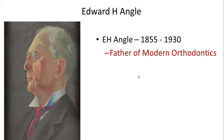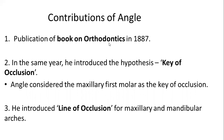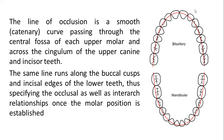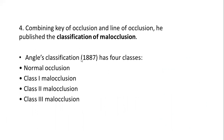Edward Hartley Angle is called the father of modern orthodontics. His contributions include the publication of a book on orthodontics in 1887. He introduced the concept of the key of occlusion, in which he considered the maxillary first molar as the key of occlusion. He also introduced the line of occlusion for maxillary and mandibular arches — a smooth curve or catenary passing through the central fossa of each upper molar and across the cingulum of the upper canines and incisors, while for the mandibular arch the line runs along the buccal cusps of the posteriors and the incisal edges of the lower anterior teeth. Combining these two concepts, he published his classification of malocclusion.